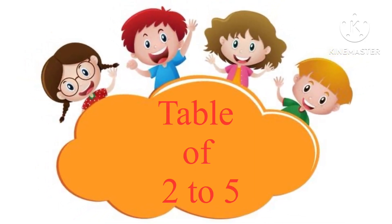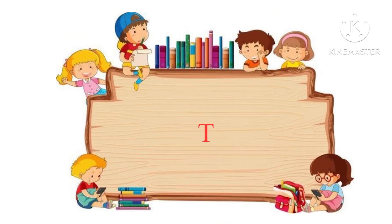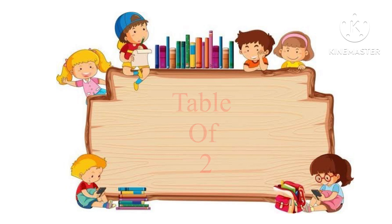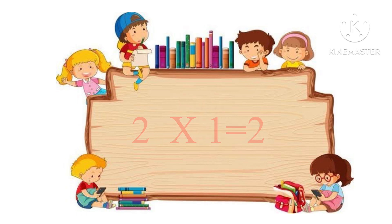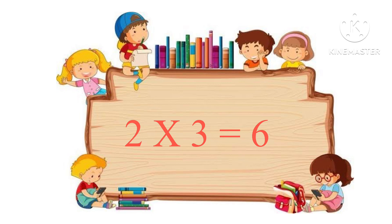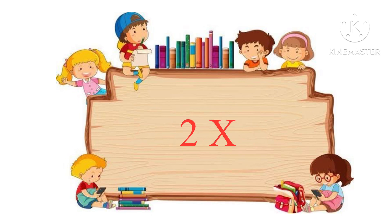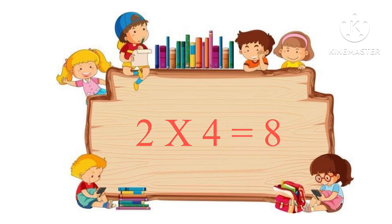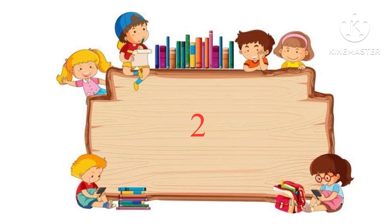Table of 2 to 5. Table of 2: 2 1s are 2, 2 2s are 4, 2 3s are 6, 2 4s are 8, 2 5s are 10.